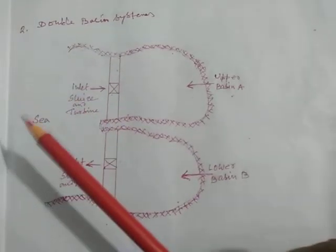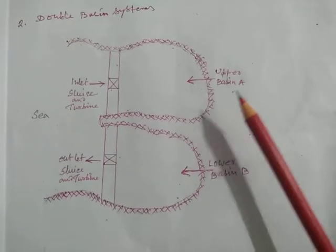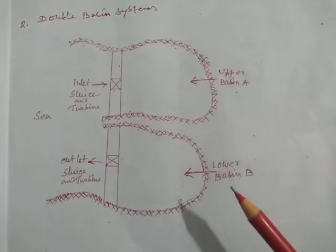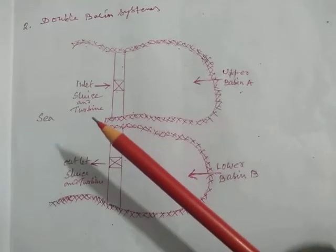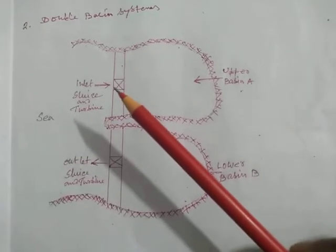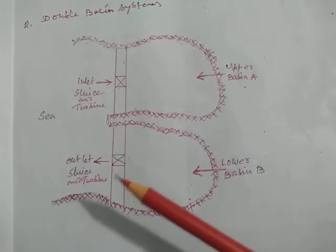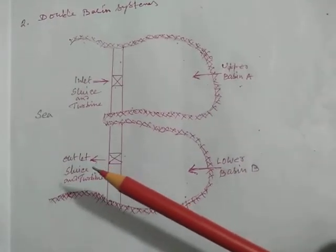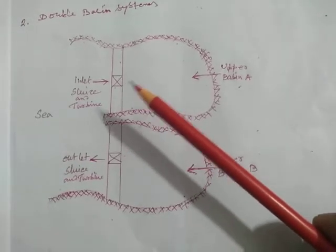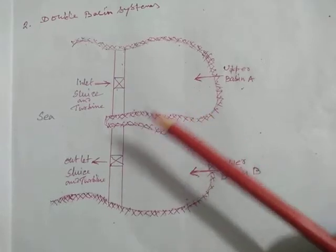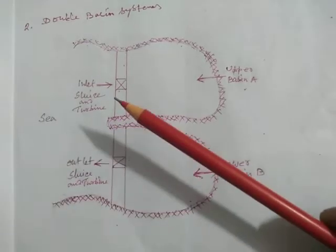Number two: double basin system. This is the sea, inlet of sluice for upper basin A and lower basin B. The inlet has sluice and turbine. The lower basin is the outlet with sluice and turbine. Inlet of water here, outlet of water there. This is the higher and lower—this is the double basin system.